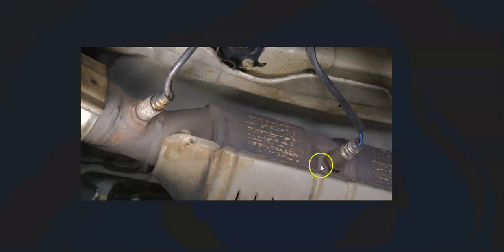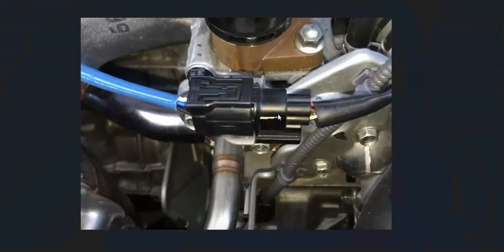The first thing you want to do is locate this bank one sensor two oxygen sensor on your particular vehicle. Once you locate it, check out the wiring real good. Be sure there's no opens, cuts, or anything like this. If anything's wrong with the wiring, it's going to cause the same symptoms as a bad sensor.